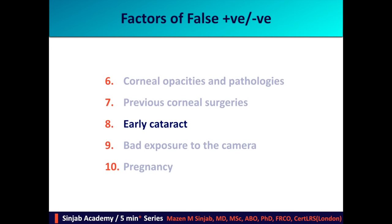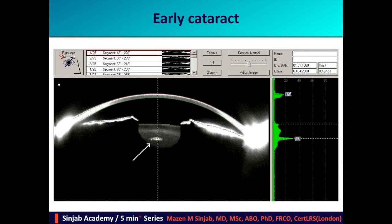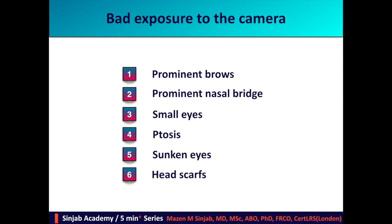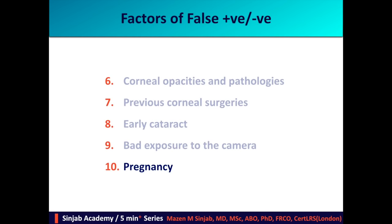Early cataract is an important source of disparity in refraction, especially in astigmatism, so we must check the lens after dilating the pupil very carefully. Bad exposure to the camera may occur because of prominent brows, prominent nasal bridge, small eyes, ptosis, sunken eyes, or head scarves. Finally, pregnancy affects corneal thickness, corneal curvature, and refraction.